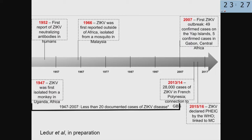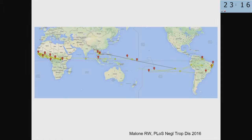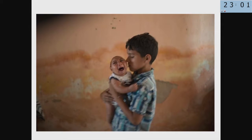When the virus reached Polynesia, there was a huge increase in the number of infections, until unfortunately it arrived in Brazil in 2013. It's believed it arrived during the Confederation Cup — the championship one year before the World Cup. And when it arrived in Brazil, there was a huge increase in the number of cases of microcephaly, though at that time the connection between Zika infection and microcephaly was not yet clear.